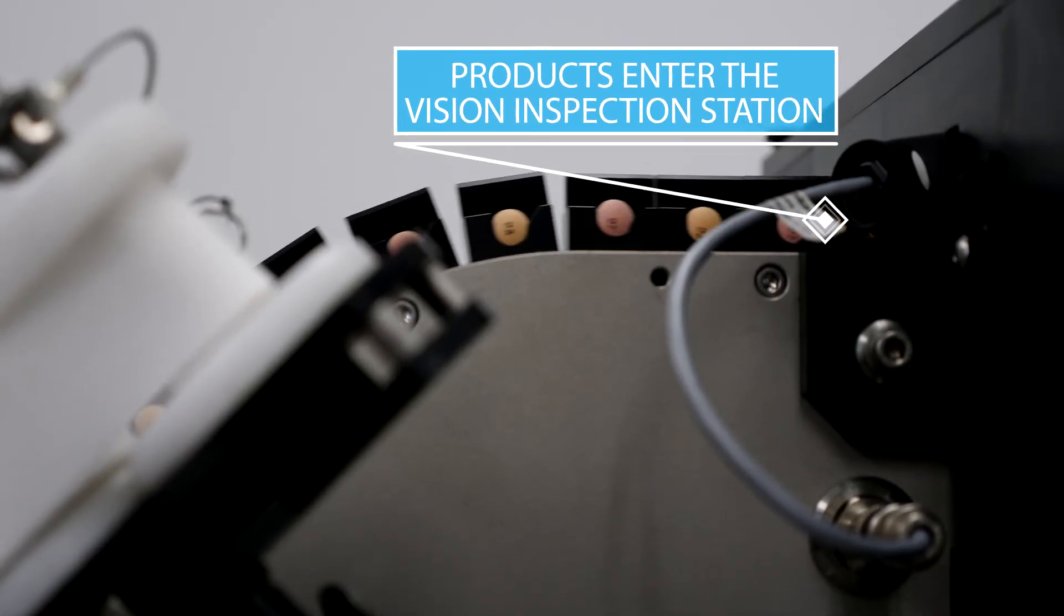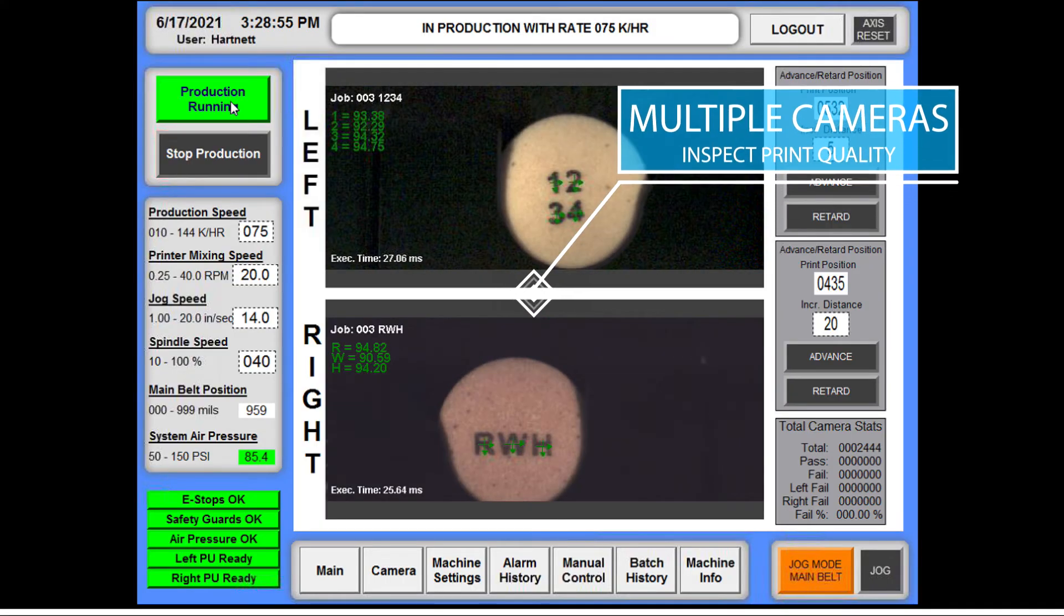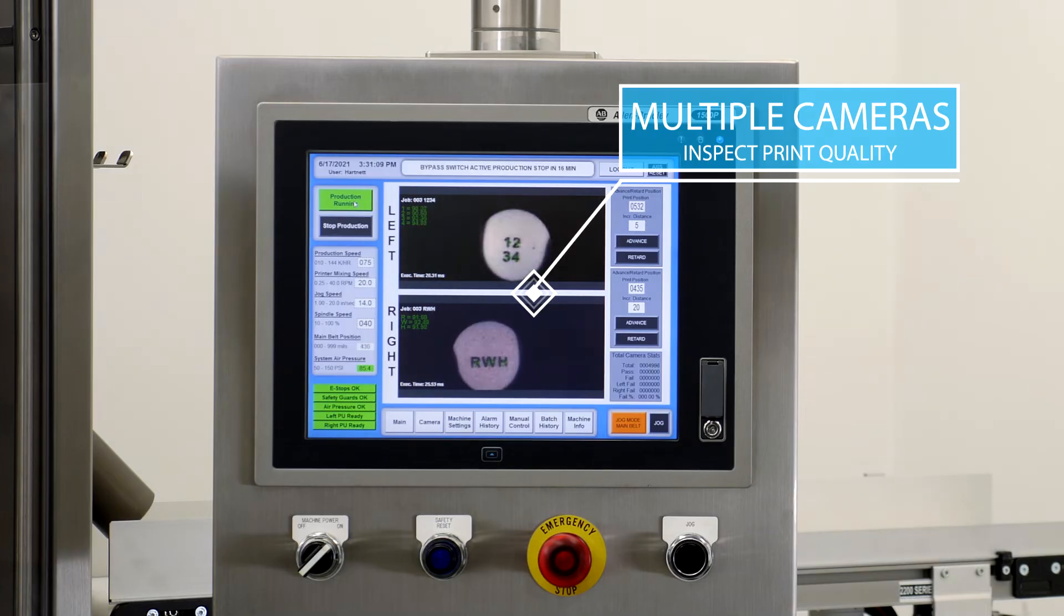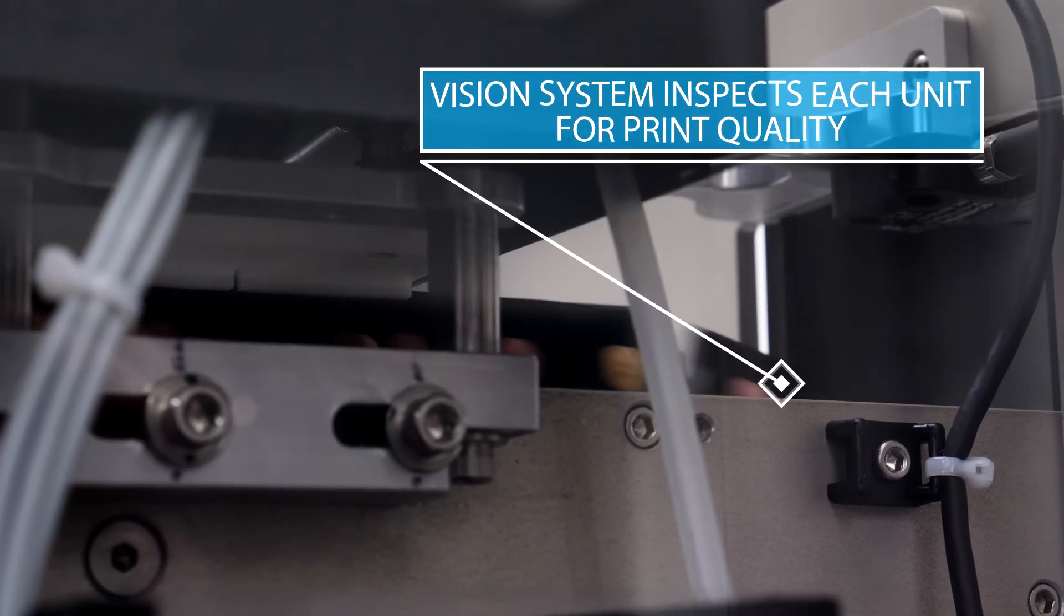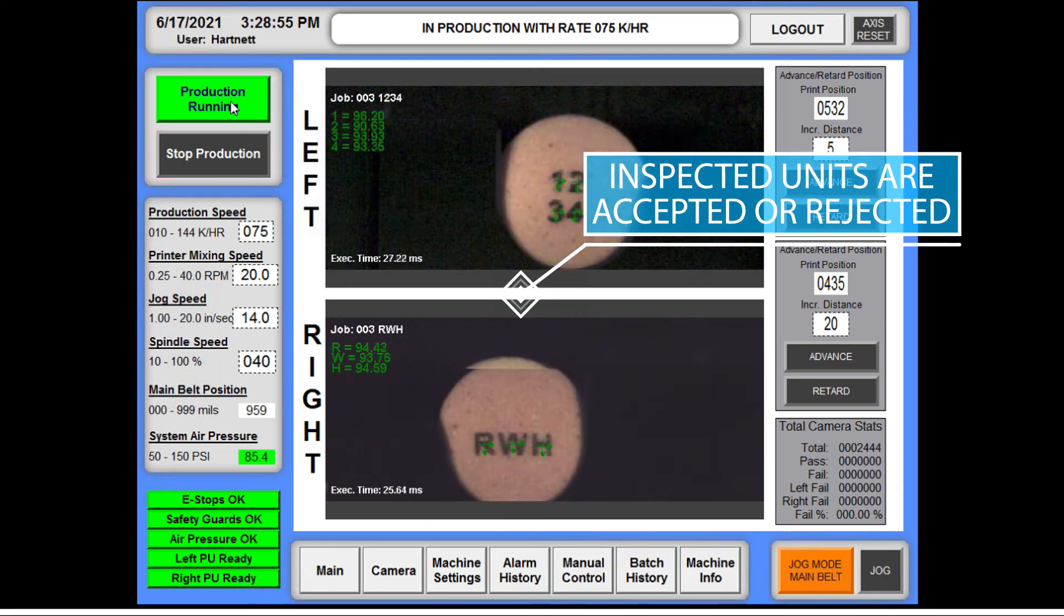After printing, the product is carried to the vision inspection system, which scans characters, trademarks, or logos that are printed on the tablet or capsule. Any product that does not meet our high-quality standards is filtered out through our single tablet rejection system.